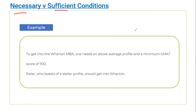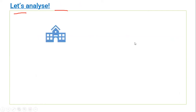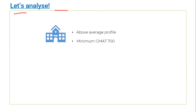You can pause the video here and go through the question for a minute. All right, I hope you had a chance to go through it. So what do we have? We have Wharton, and to get into the Wharton program you needed two things: an above-average profile, and a minimum GMAT score of 700.